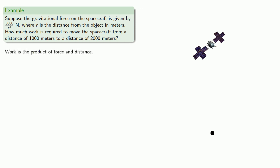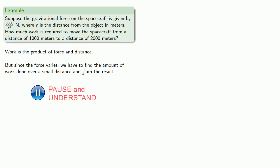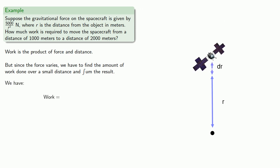So again, work is the product of force and distance, but because the force varies, we have to find the amount of work done over a small distance and sum the result. So suppose we're at some distance r, and we move out a small bit dr. The amount of work we do is going to be the force, 5,000 over r squared, times the distance dr.